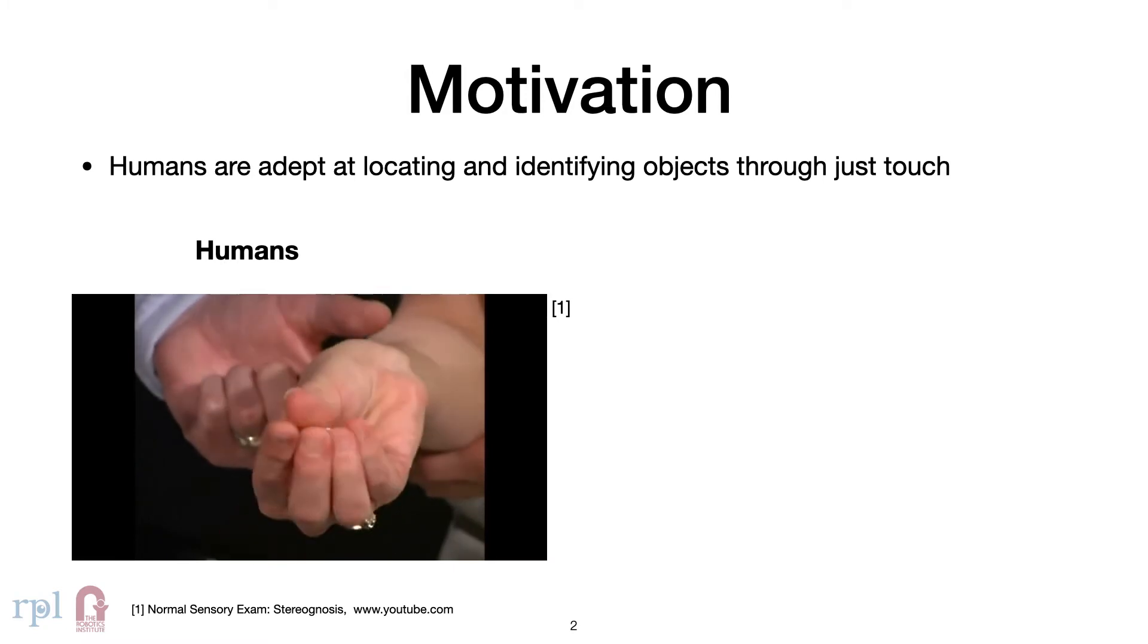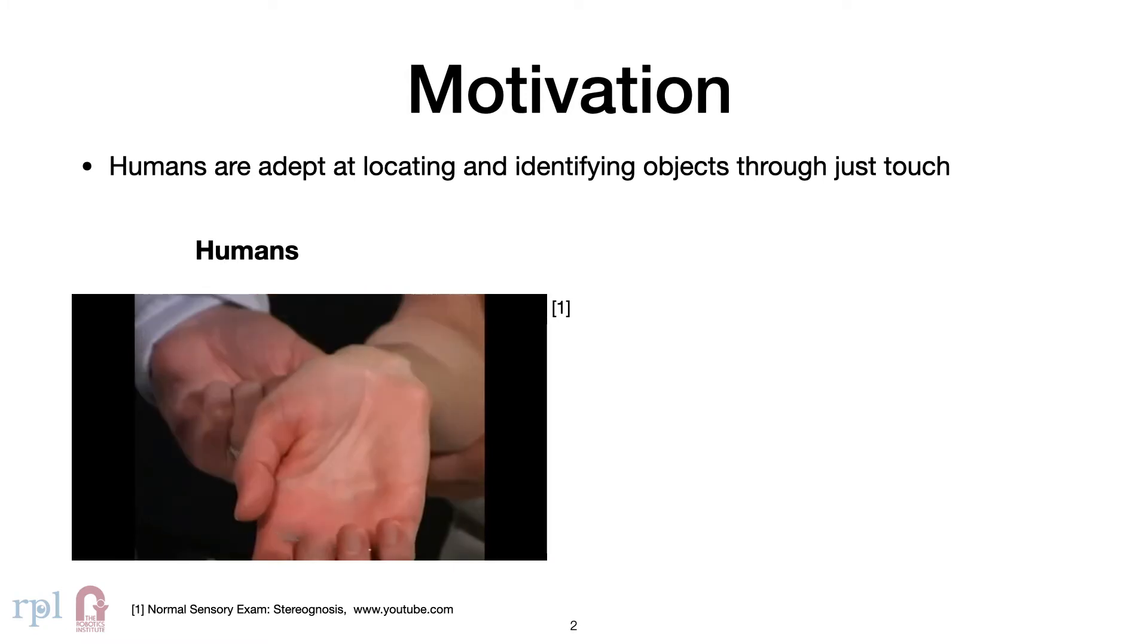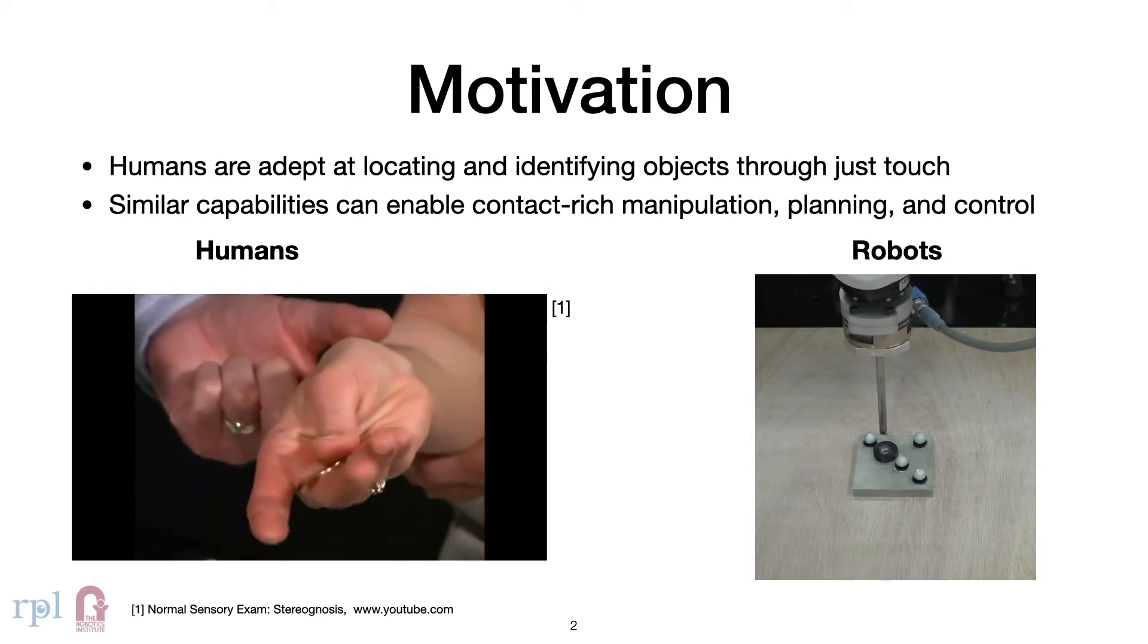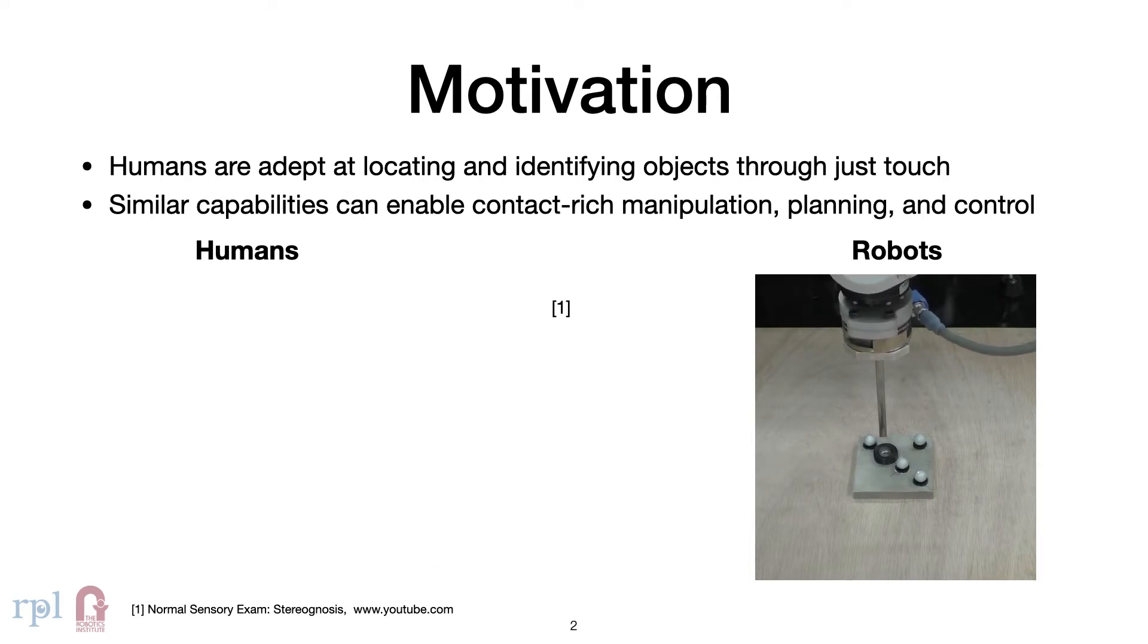Humans are remarkably good at locating and inferring object properties with just the sense of touch. For robots, such knowledge can enable better manipulation plans and strategies.